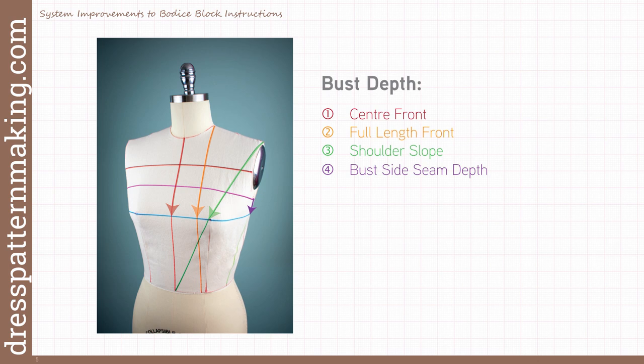Now, there are a few measurements that you can take a number of ways. For example, the bust depth can be measured from the center front neck point down, or from the high neck point down, or on the shoulder slope. I will suggest that these measurements are taken a number of ways for confirmation. With drafting blocks, getting the measurements correct is half the problem — it doesn't hurt to confirm them.